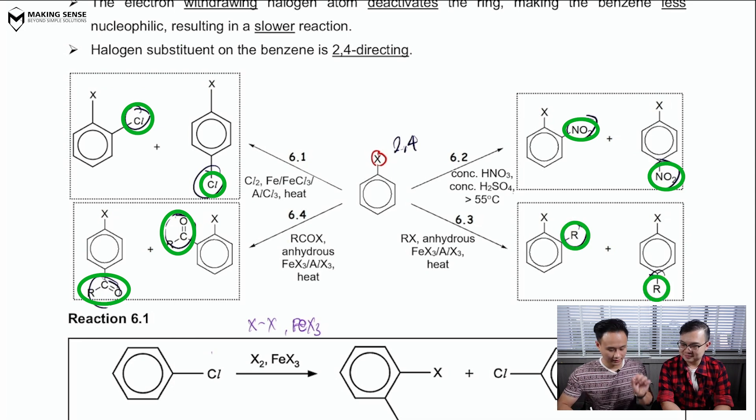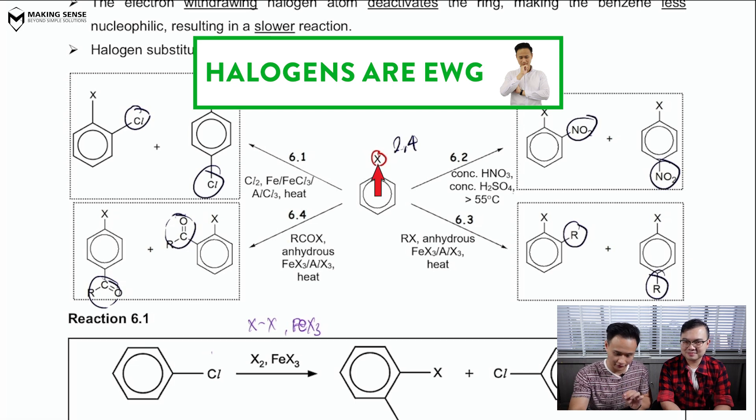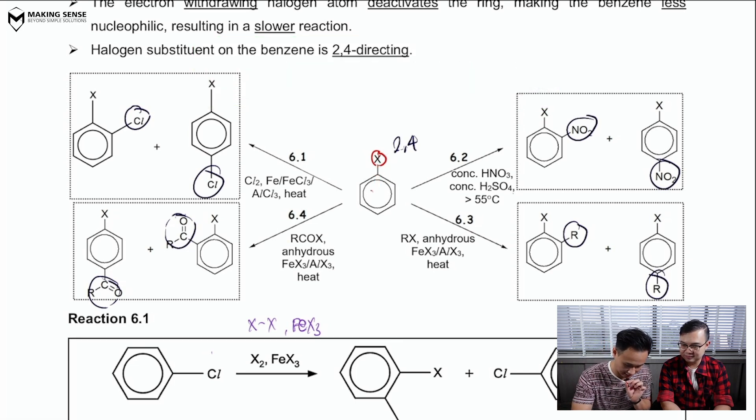Now, not only that, the X is a halogen, so it's very electronegative. If it sucks the electrons away from the benzene ring, it deactivates the benzene ring. And now, the benzene ring is less nucleophilic. Now, remind me again, Mr. Leong. So, if it's less nucleophilic, are my conditions now harsher or less harsh?